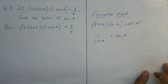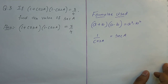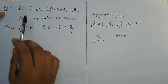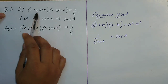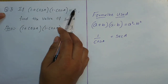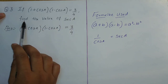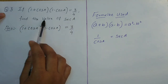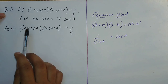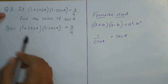Hello my dear students. In the previous video I had solved two problems, so this one is the third one. So let us begin. The question is: if (1 + cos a)(1 - cos a) = 3/4, then we need to find the value of sec a.